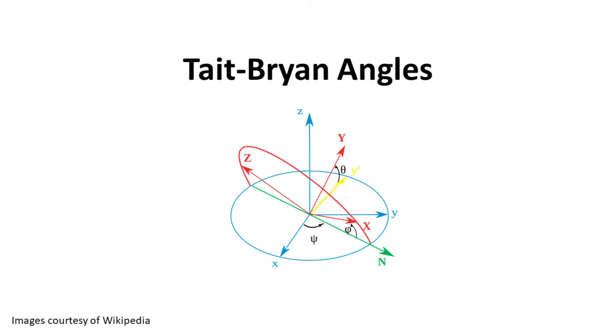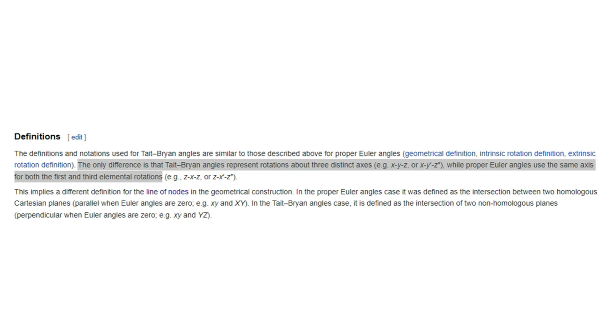As I understand it, the only difference is that Tate-Bryan angles are defined between each intermediate reference frame, whereas the more general Euler angles are all defined at the start.